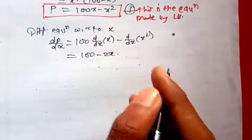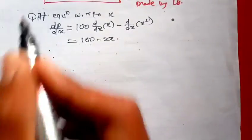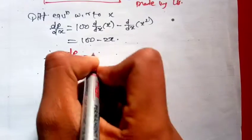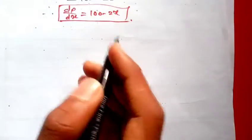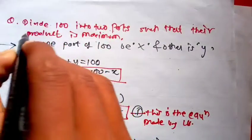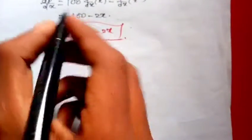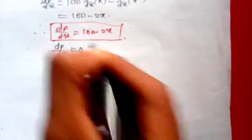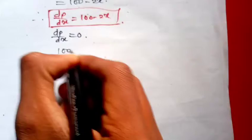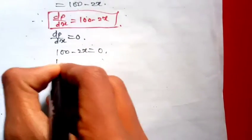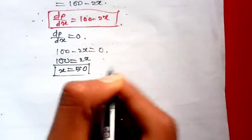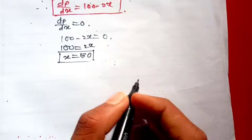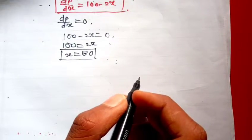dP/dX is equal to 100 minus 2X. For their product to be maximum, dP/dX is equal to zero.